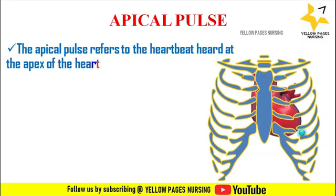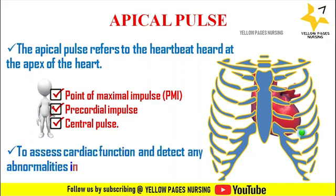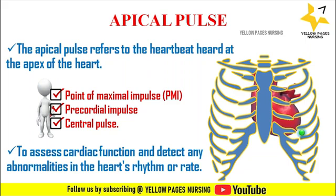The apical pulse refers to the heartbeat heard at the apex of the heart. It is also referred to as the point of maximal impulse (PMI), precordial impulse, or central pulse. It is commonly used in clinical settings to assess cardiac function and detect any abnormalities in the heart's rhythm or rate. The apical pulse gives a more accurate reading compared to the radial pulse because it directly measures the heartbeat at its source.